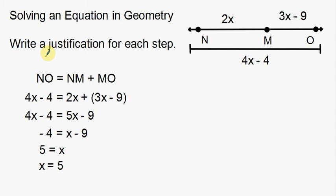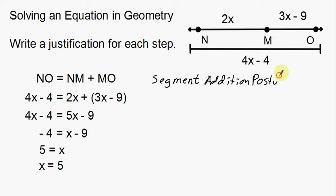Notice we're adding both small segments to get the larger segment NO. This first line isn't given to us, so I need a justification for it. I'm taking a small segment plus a small segment to get a larger segment — that is the segment addition postulate, which is the justification for why I can write this.